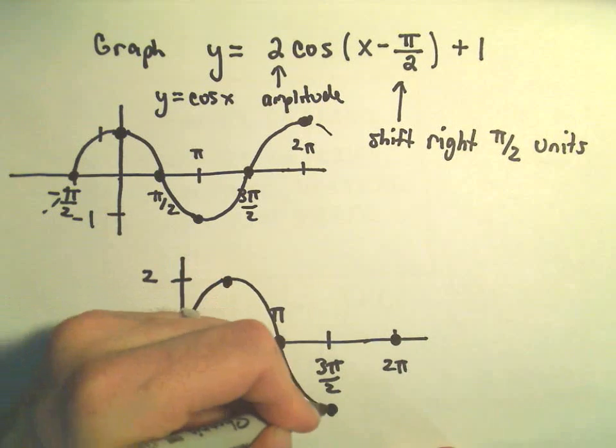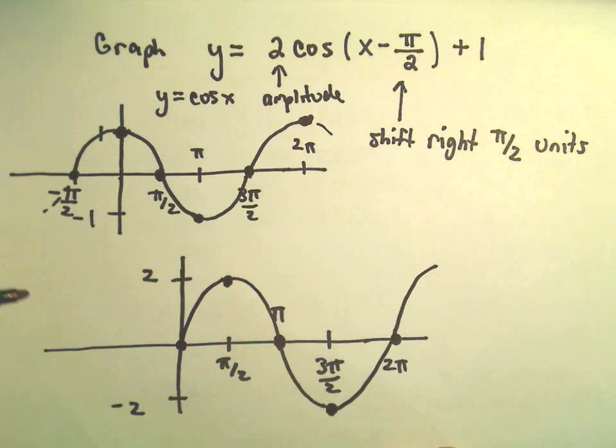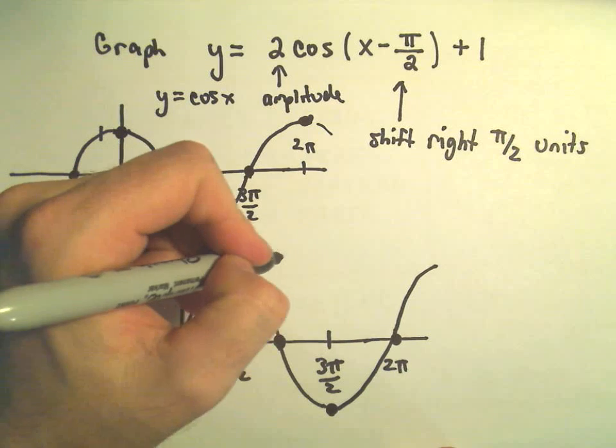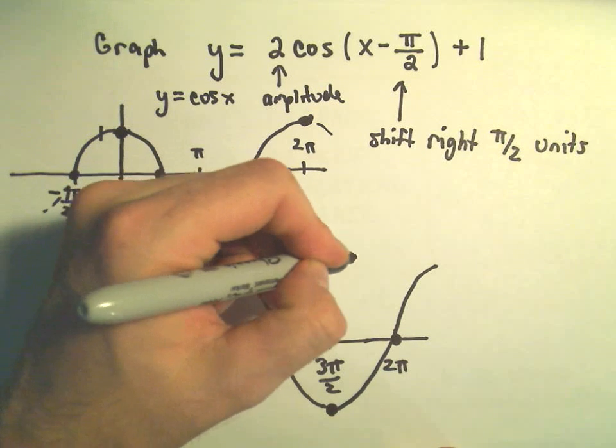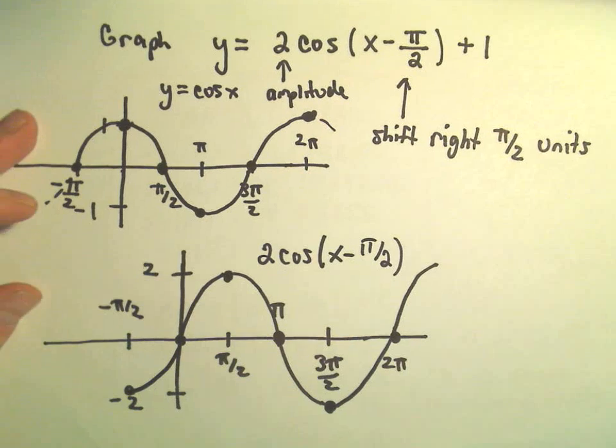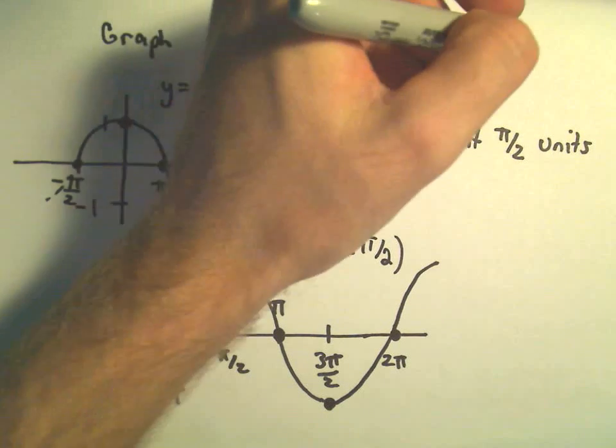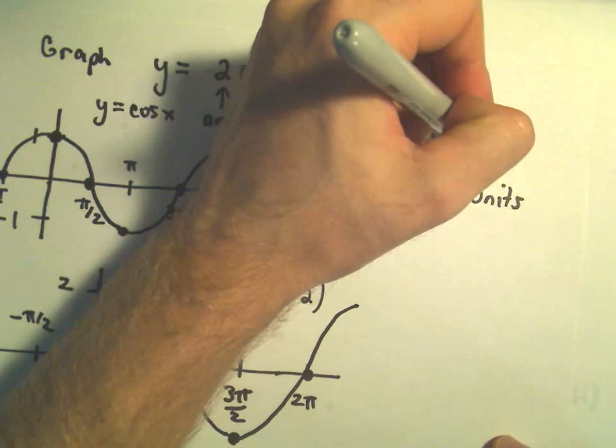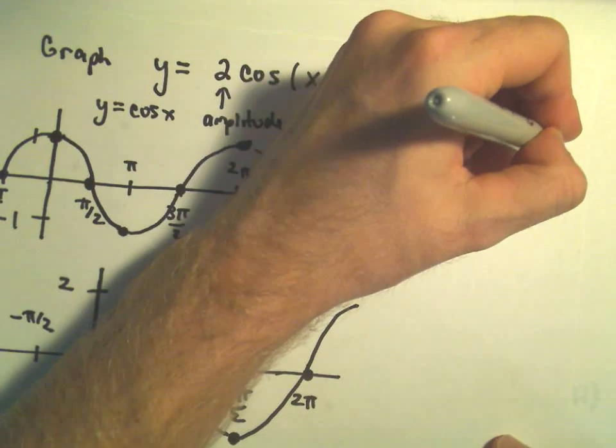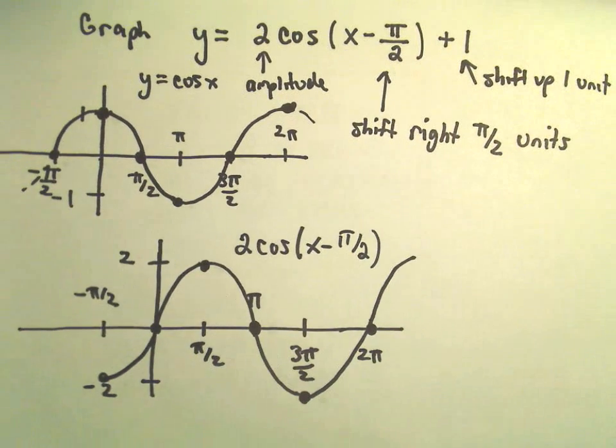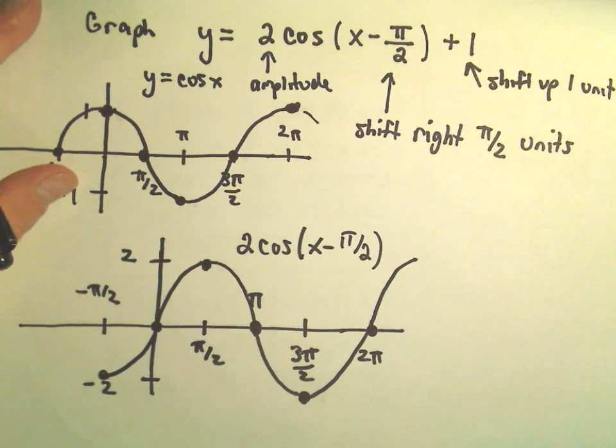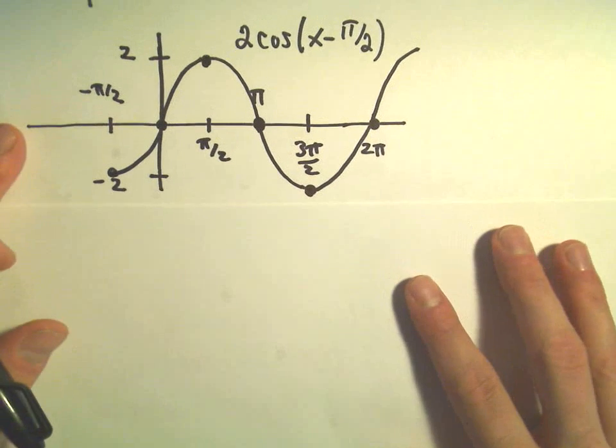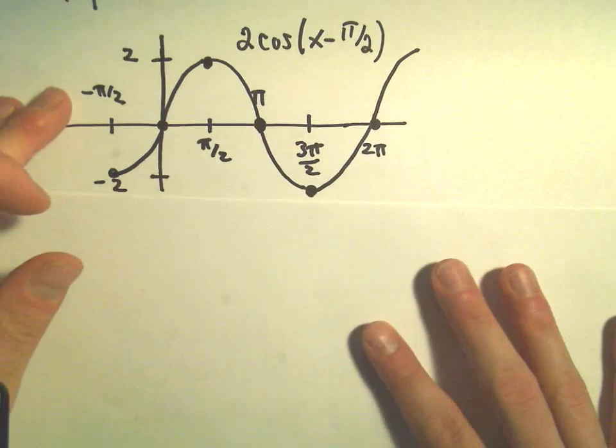Alright, so I think we've got our kind of rough graph here. At negative pi over 2, we would be down here at negative 2. So now we've got a rough graph of 2 cosine of x minus pi over 2. And last but not least, all we have to do—remember this plus 1 is going to be a vertical shift. And the plus 1 is just going to shift the graph up 1 unit. So grab another piece of paper here. I'm just going to simply take this original graph that we came up with and shift it up just one unit.